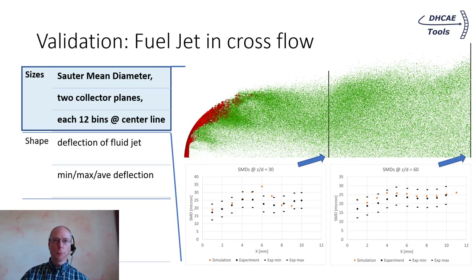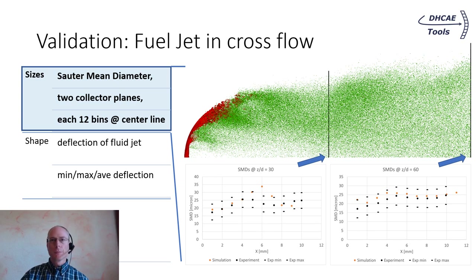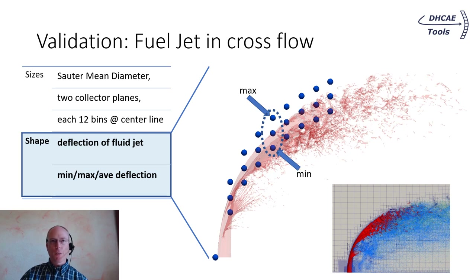There are two aspects highlighted in the benchmark. First is the Sauter mean diameter of the cloud, determined at two different planes downstream. The charts show the experimental minimum, maximum and average values in black, and the OpenFOAM results as orange marks — there is very good agreement for the particle sizes. The other aspect is the deflection of the fluid jet, where the back of the jet is compared to its shape in the experimental pictures. The average position of the jet is perfectly matched by the simulation, demonstrating the excellent quality of OpenFOAM.